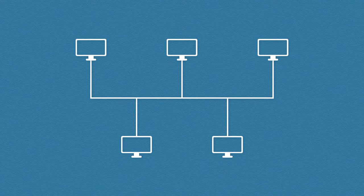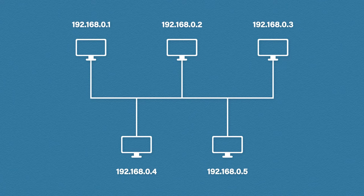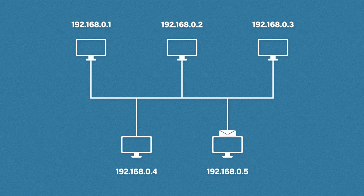Computers work in the same way. Each computer in a network needs to have a unique address called an IP address. And when sending data to a computer, just like letters, we need to add the destination address. We also need to include a return address so they know where to reply.